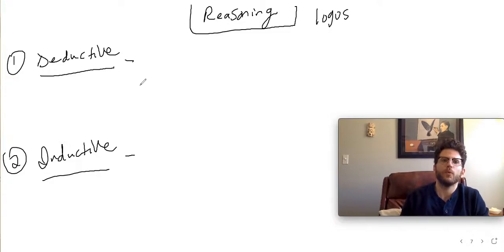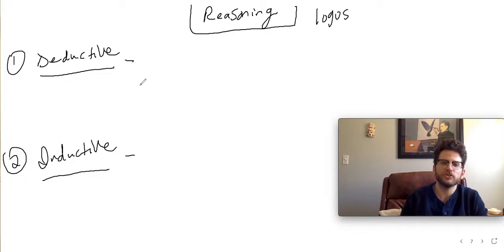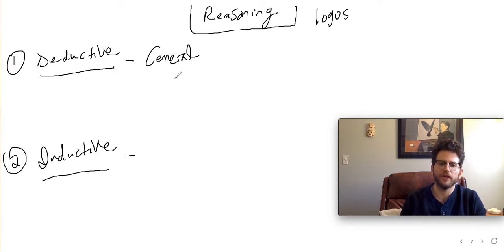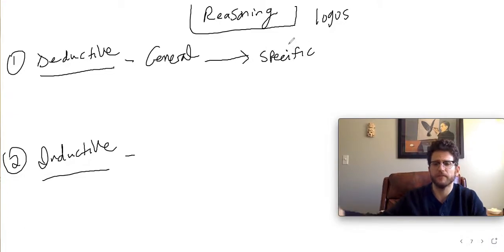With deductive reasoning, what we're doing is starting with a general idea, observation, or principle, and then from that general idea we are deriving something specific — a specific idea, specific principle, et cetera.